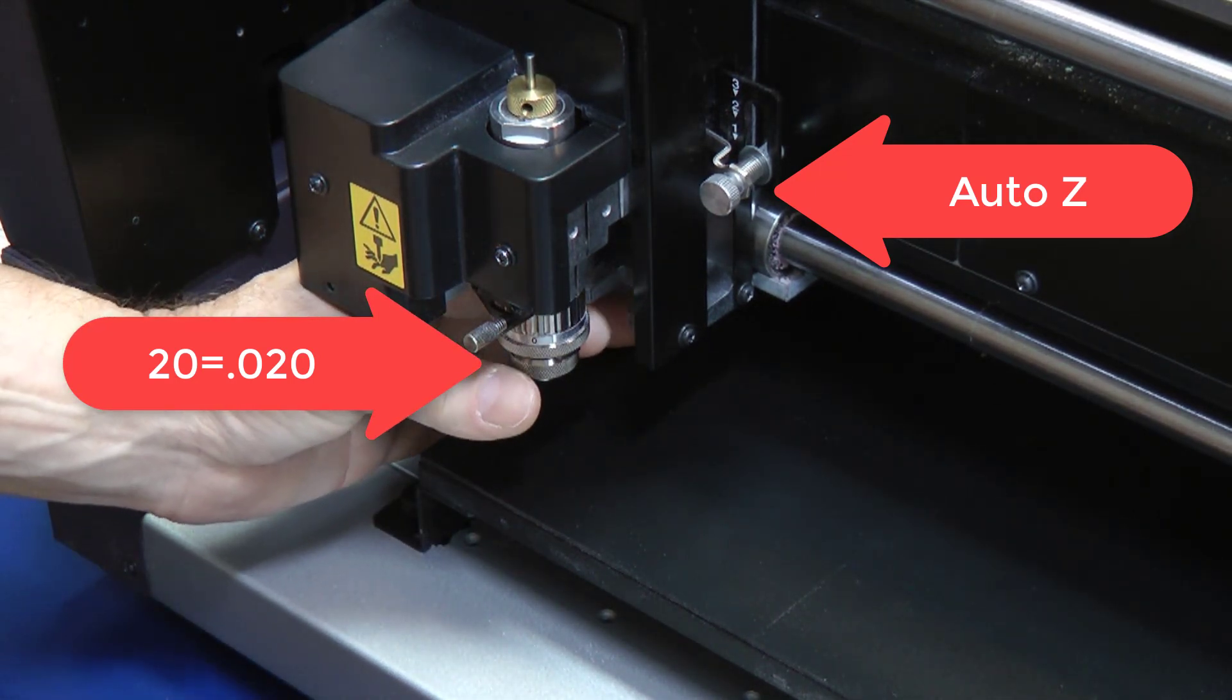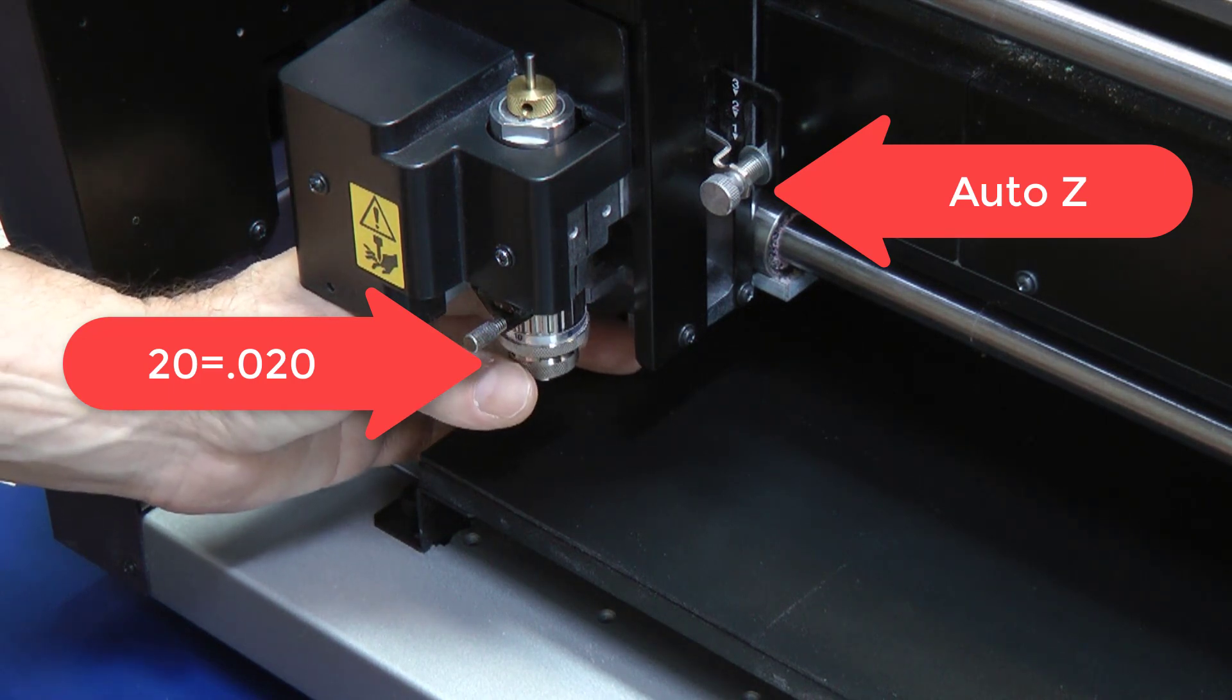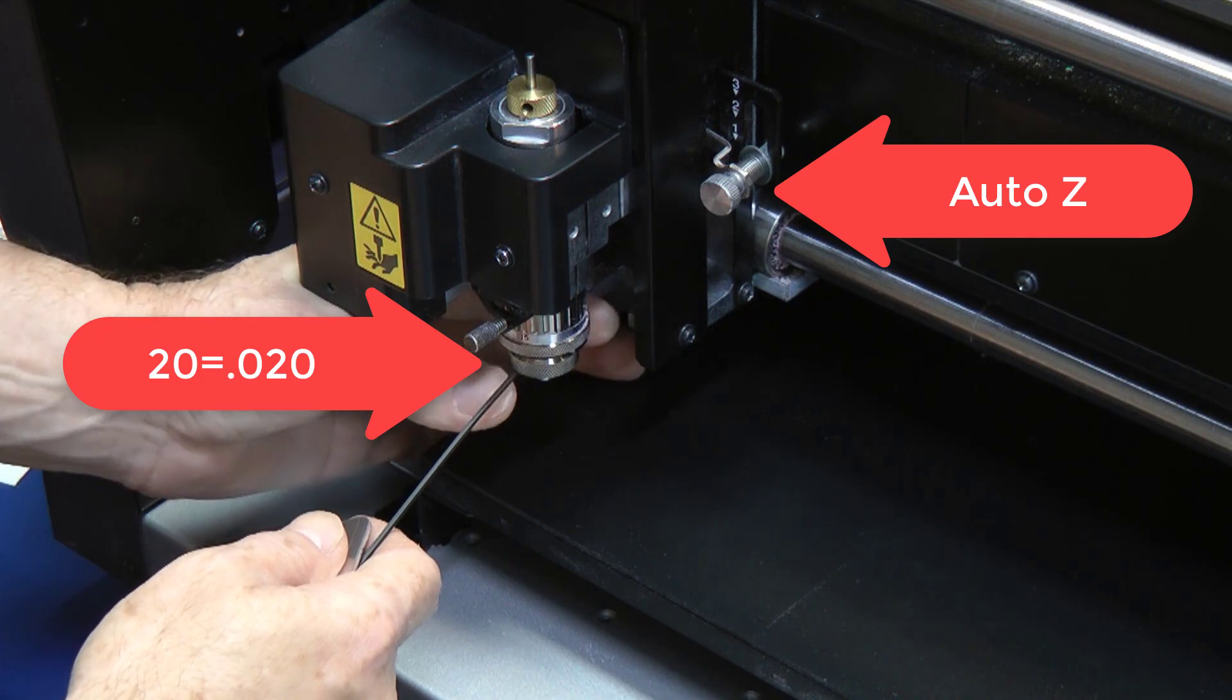Spin counterclockwise until you hit 20 or 20 thousandths. Make sure that the lock lever is set to either 1 or 2 for your Auto Z.